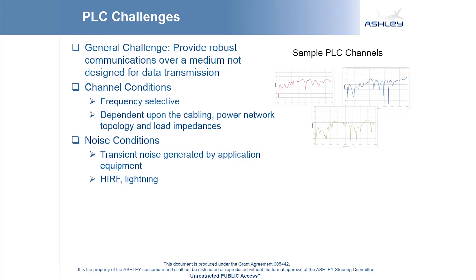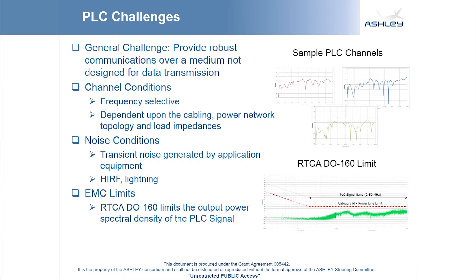The application equipment attached to the power distribution network will also generate transient noise. The lack of shielding in the power wiring makes the power network highly susceptible to externally coupled noise sources such as HERF or lightning. Compounding all of these issues are the strict electromagnetic compatibility guidelines regulating the environmental requirements of all electronic devices within the aircraft. Emissions from intentional PLC signals must adhere to the same limits as all other devices producing unintentional emissions within the aircraft. This limits the transmission power of the PLC signal.